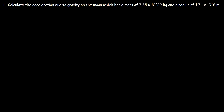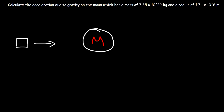What formula can we use to calculate the acceleration due to gravity of a planetary body? Let's draw a picture. Let's say this is the moon and we have some object to the left of the moon. The moon is going to pull the object toward itself, so this object is going to have an acceleration — just like an apple falling to the ground, the Earth pulls the apple toward itself. The same is true with the moon: it exerts a gravitational force that pulls the object toward it, and that acceleration is known as the acceleration due to gravity.